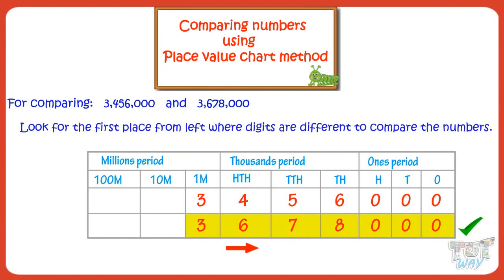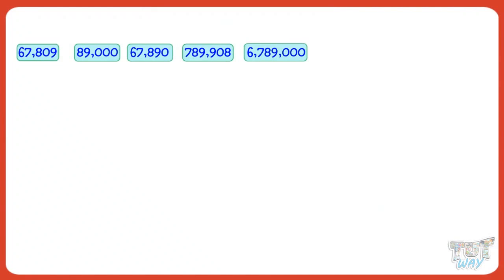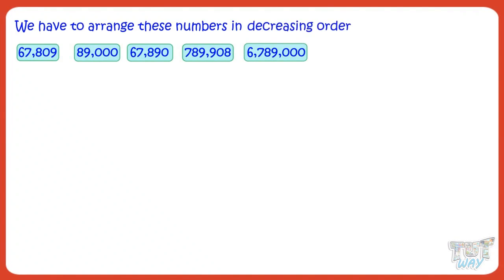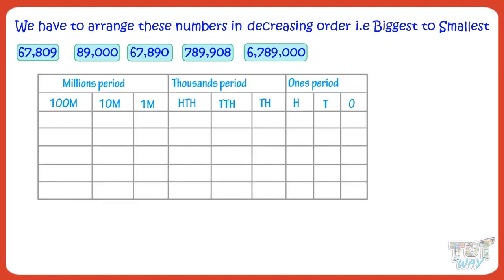Now let's take another example. Here, we have not 2 but 5 numbers and we have to arrange these numbers in decreasing order — that is, from biggest to smallest. Now let's see how we compare the numbers using the place value chart. Here is our place value chart. First of all, write all the numbers in the place value chart, remembering to write each digit under its place value.